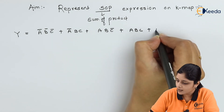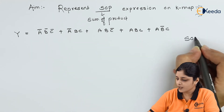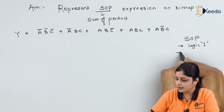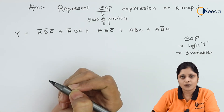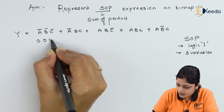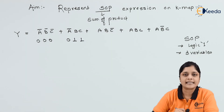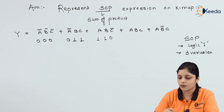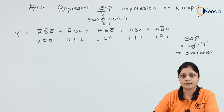The third expression is: y equals ā·b̄·c̄ plus ā·b·c plus a·b·c̄ plus a·b·c plus a·b̄·c. Again, the concept is that this is an SOP expression, so it will be represented by logic 1. Three variables are present, so we will use a three-variable Kmap. The next step is finding out the minterms.